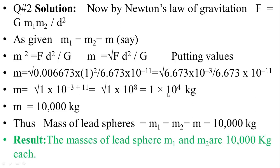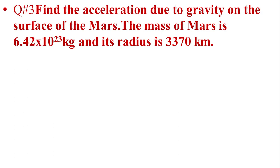Now in question number 3, find the acceleration due to gravity, meaning the value of small g, on the surface of Mars. The mass of Mars is 6.42 multiplied by 10 to the power 23 kg, and its radius is 3,370 km. Given data: mass of Mars is equal to 6.42 multiplied by 10 to the power 23 kg, and radius is 3,370 km.